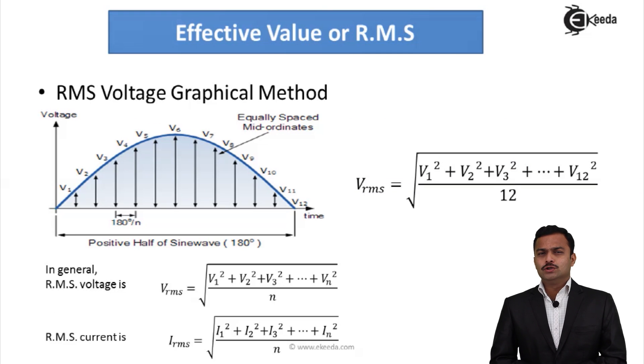Now, effective value can be calculated by two ways. One is graphical and second is analytical. So let's see the graphical method. In graphical method, I have considered only a half cycle. RMS is nothing but root mean square. So what do we have to do? We have to take the mean of square of every instantaneous value and then take the square root of it. So what I have done is considered only half cycle.